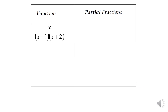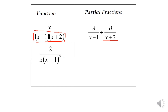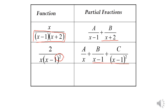In Example 1, when we have the denominator as a linear factor, it becomes the partial fraction form a/(x−1) plus b/(x+2). This partial fraction form is also known as decomposition form. For repeated linear factors, the partial fraction becomes a/x plus b/(x−1) plus c/(x−1)².